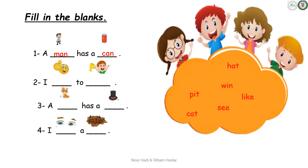Sentence number two. Look at the picture. What do you think he is doing? Yes — I like to win. Very nice. Sentence number three. Look at the picture. What is it? Yes, it's a cat. So, a cat has a hat.